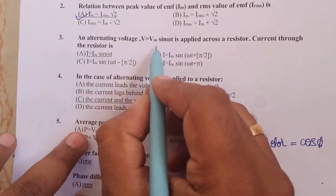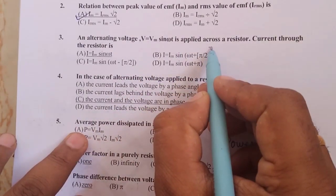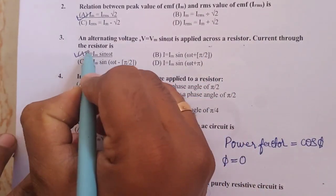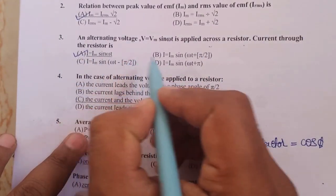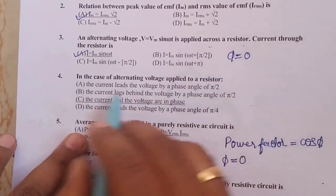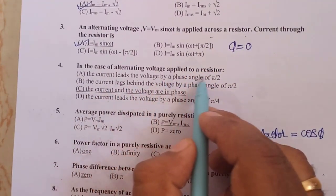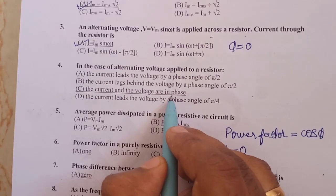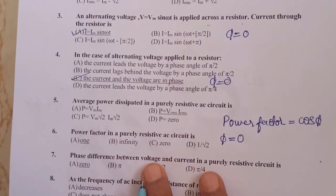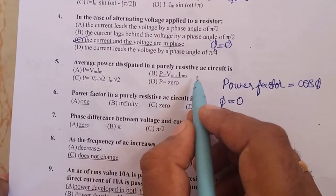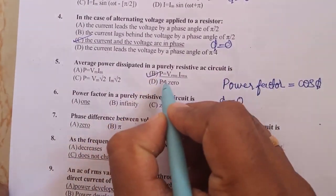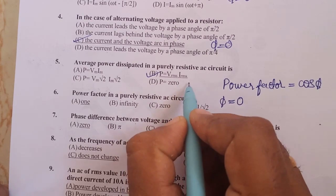Alternating voltage V is equal to V0 sin(ωt) is applied across a resistor. Current through the resistor is given by I is equal to I0 sin(ωt), where the phase value phi is equal to 0. In case of alternating voltage applied to a resistor, the current and the voltage are in phase, that is phi is equal to 0. Average power dissipated in a purely resistive circuit is P is equal to Vrms into Irms.